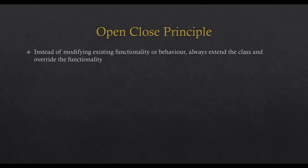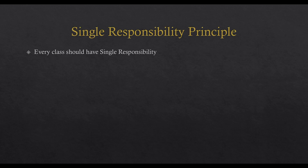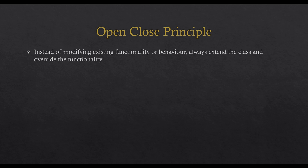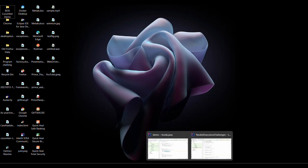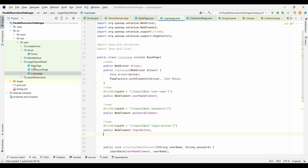The next principle is the Open/Closed Principle, also known as OCP. It states that code should be open for extension but closed for modification — meaning if functionality is working fine and we want to modify it, we should not modify the same function. Instead, we should extend that class and override the function so we don't impact existing functionality.